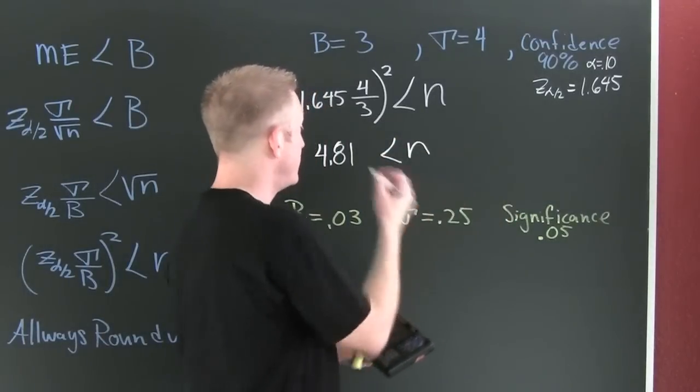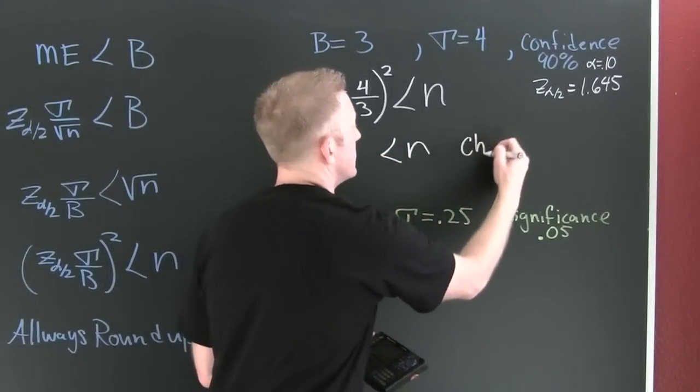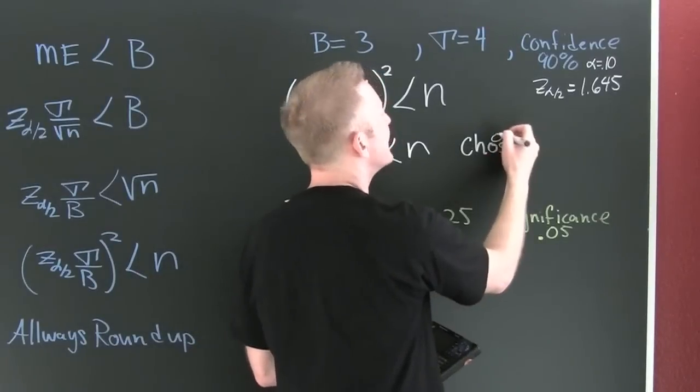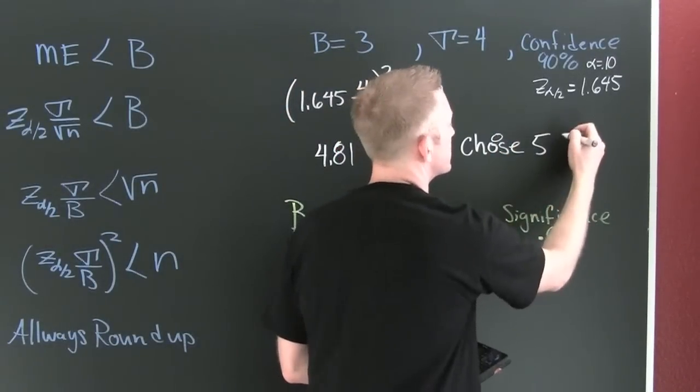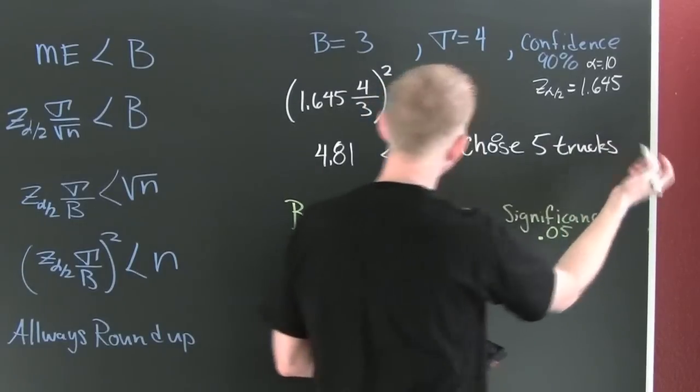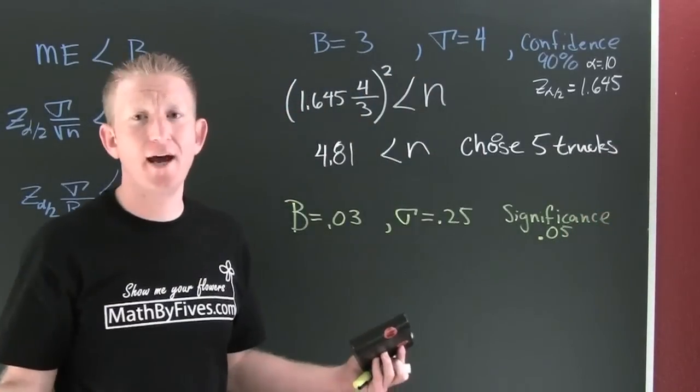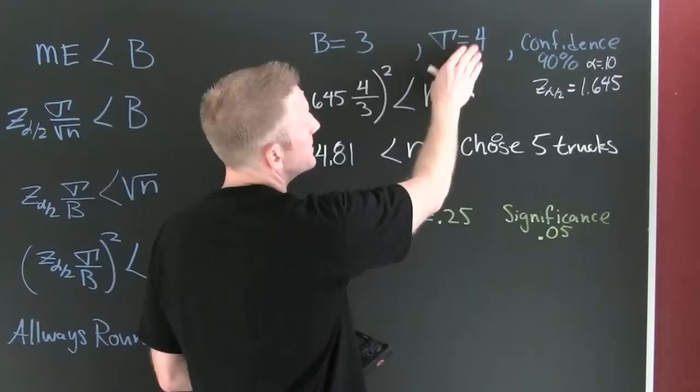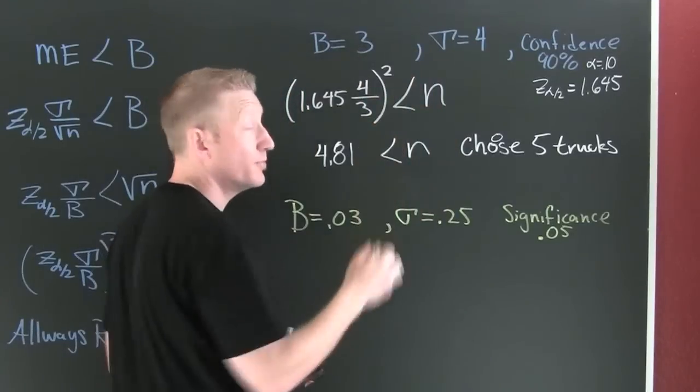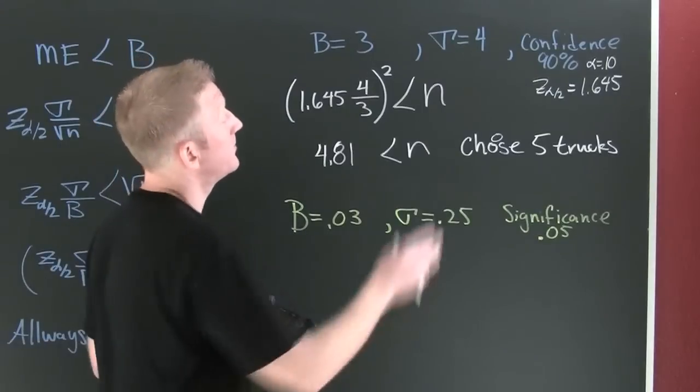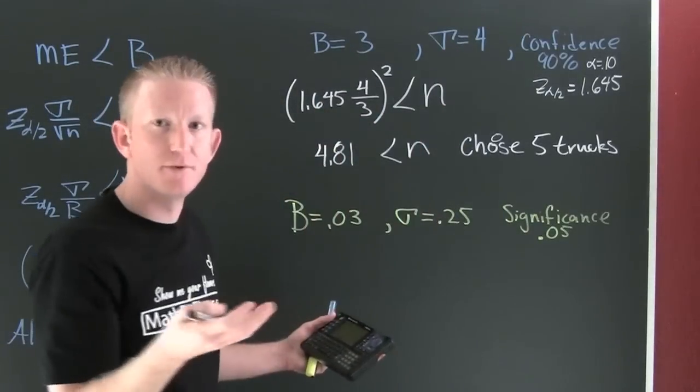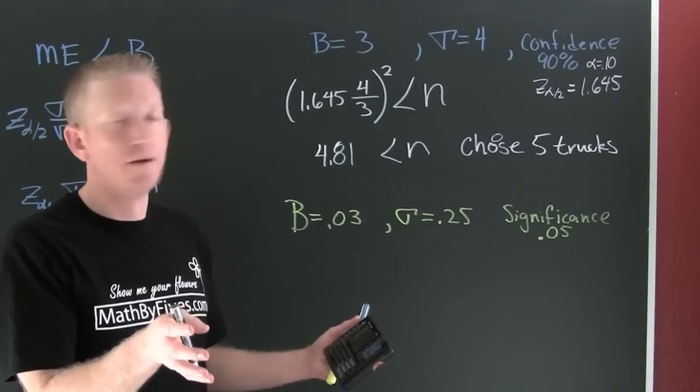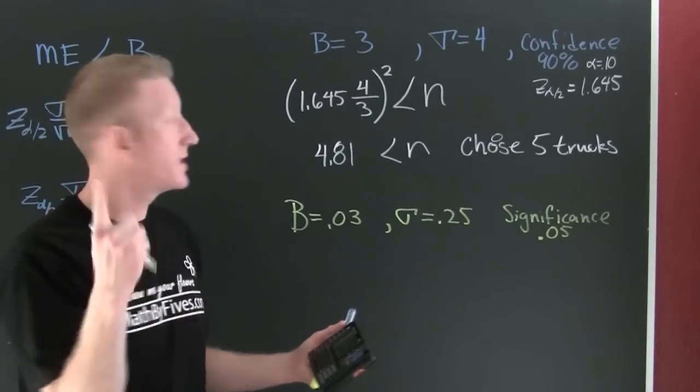I'm gonna choose five trucks. Why did that happen? Our bound relative to our standard deviation were pretty close, right? This population usually varies by four, so you can expect 68% to fall within four, that's one standard deviation. So we don't really need to choose all that many.